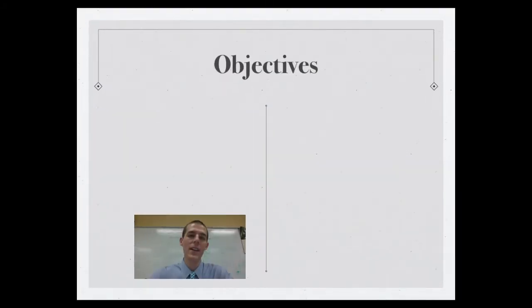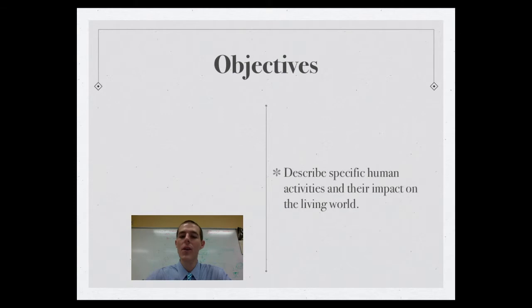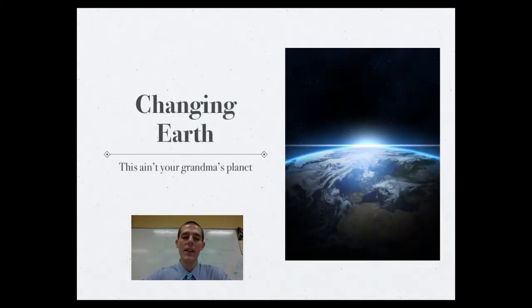Here are your objectives as always. Just one thing that I need you to know or be able to do by the end of this video and that is to describe specific human activities and their impact on the living world. Like I said, this is all about impact on the living world. So first thing that I want you to understand is the planet that we currently inhabit is not your grandmother's planet. The world has changed significantly since the industrial revolution began in the 1850s. And through the rest of this video, I'm going to go through several specific things that humans are doing and how they're impacting the earth. But just recognize that probably even from the time that you were born, the planet that you live on is now significantly different environmentally, ecologically, et cetera. So spend the rest of our time talking about specific things that humans do and how they impact the earth.